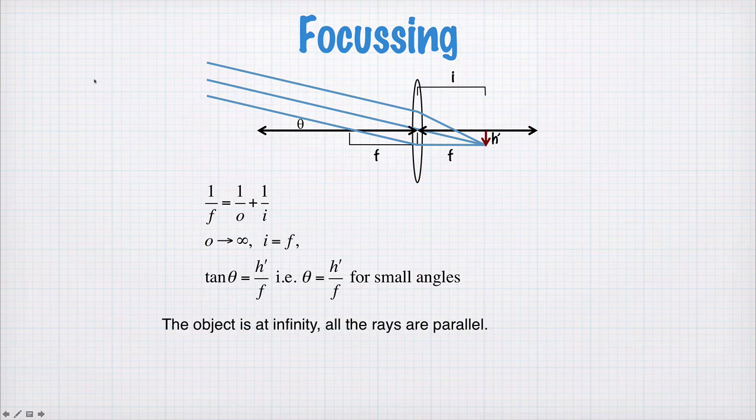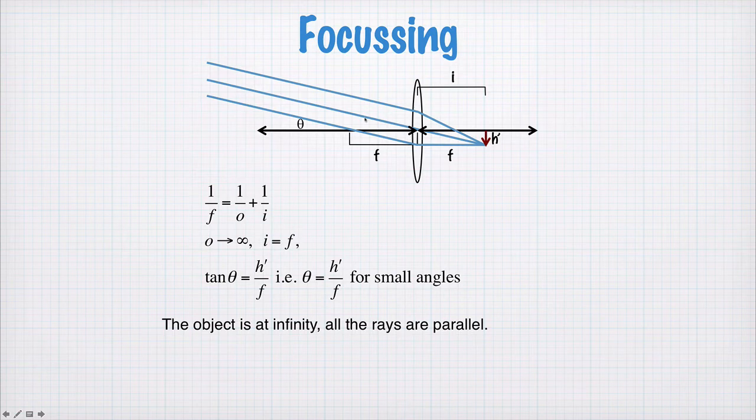Now, if the object is at infinity, basically what we're saying is all these rays are parallel. Because if the object is a long, long way away, then by the time you reach this lens, the rays that reach this lens have all traveled in roughly the same direction, or very close to the same direction.